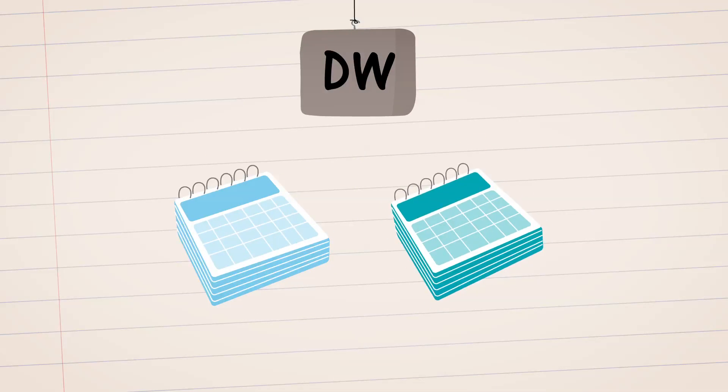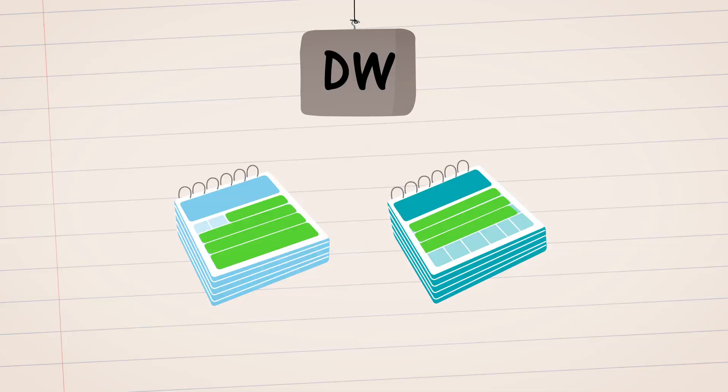Derivative warrants allow investors to buy or sell a particular stock at a set price for a certain period. DW also allows investors to get exposure to that stock for only a fraction of its share price.